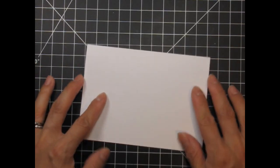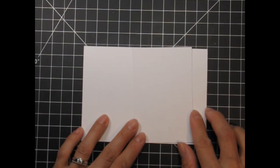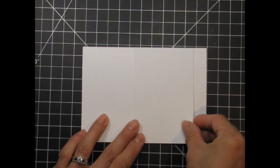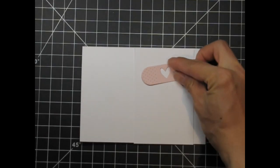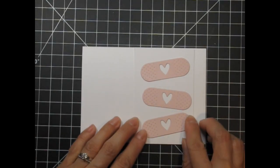I'm starting with a 4 inch by 5 and a half inch base that opens from the bottom. I've trimmed a panel for the Band-Aids and sentiment and I'll be popping that up with foam tape. To decorate the panel I'll place 3 Band-Aids angled like so.